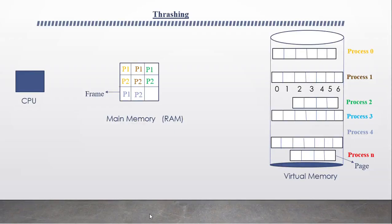In our present video, we will be discussing about thrashing. In our previous video, we discussed memory management, virtual memory, and degree of multiprogramming. From the degree of multiprogramming, we mentioned that if the degree of multiprogramming increases more and more, it will lead the system to enter the thrashing state. Before we go to the definition of thrashing, we should first see how thrashing happens.